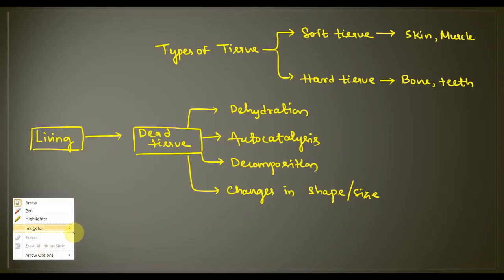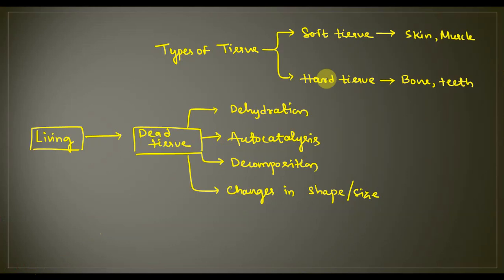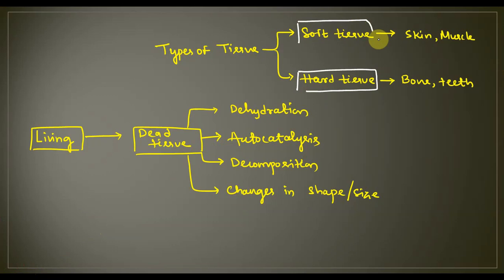We have a type of tissue in the same category. We have heart tissue. We have bone and teeth. We have preservation of the body. We have the composition of bone and teeth, and we have a lot of degradation.